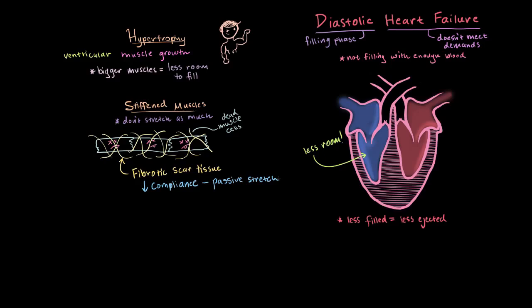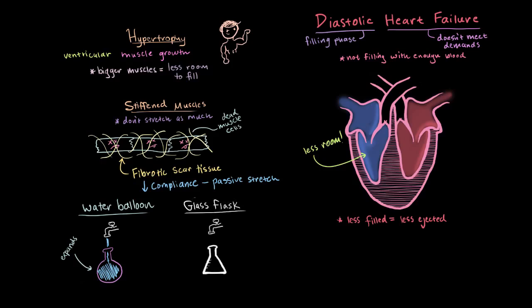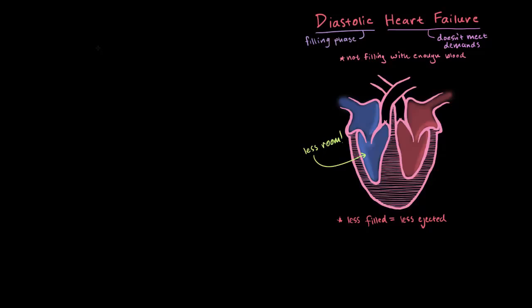Think of filling a water balloon — when you put water in, it gets bigger, it expands passively. Now think about filling one of those glass flasks from chemistry class. What happens when you fill it up? It's not going to get bigger or change shape — it will just fill up and start to overflow. That's because it's far less compliant. It's the same with a heart full of fibrous connective tissue: it can't relax, it can't passively expand, and it can't fill completely. That's what's going on with diastolic heart failure.